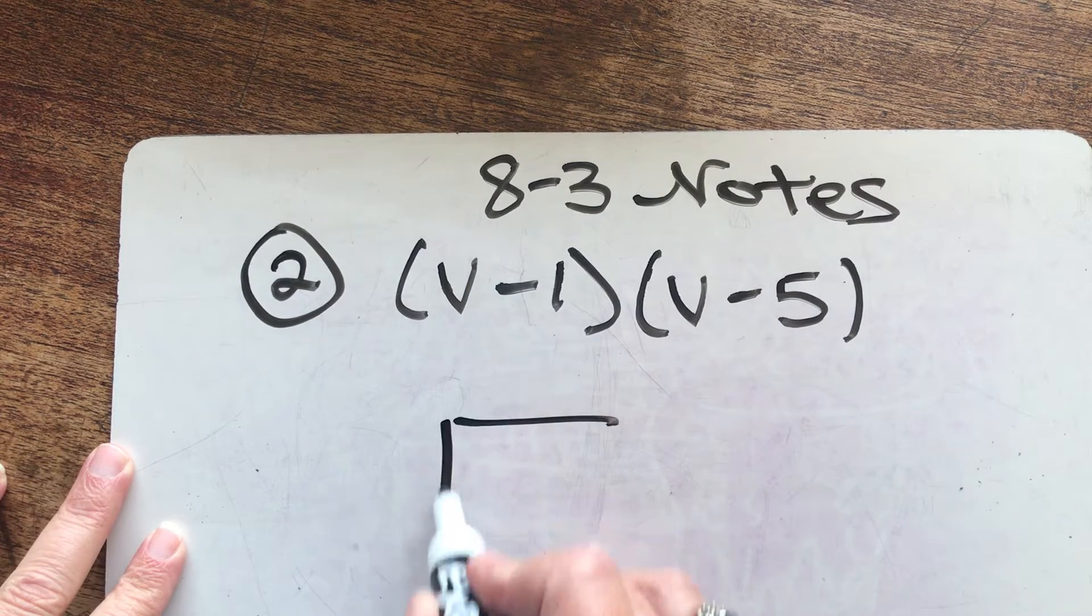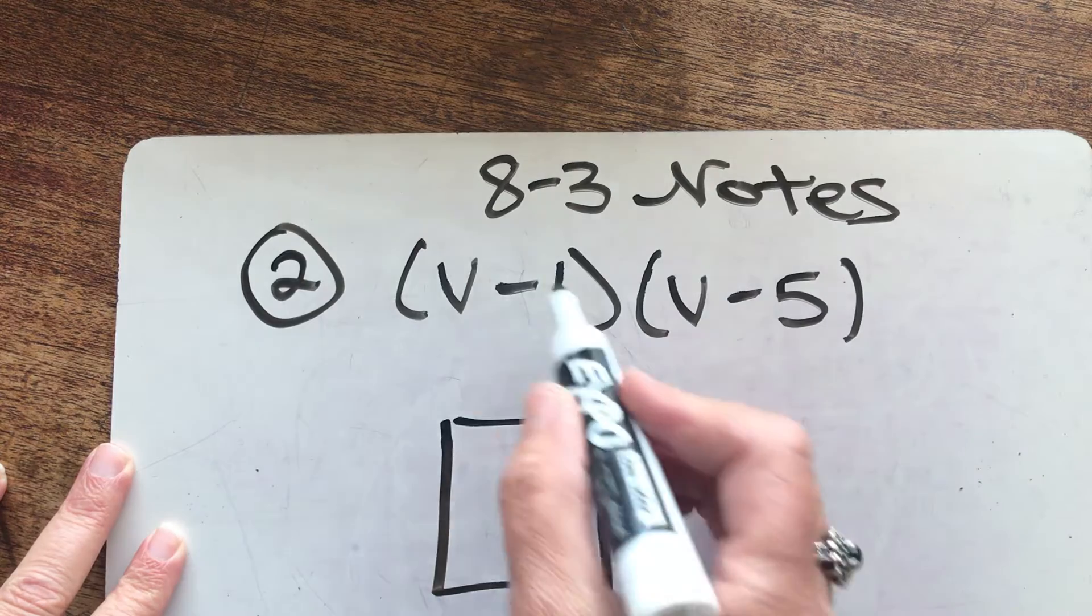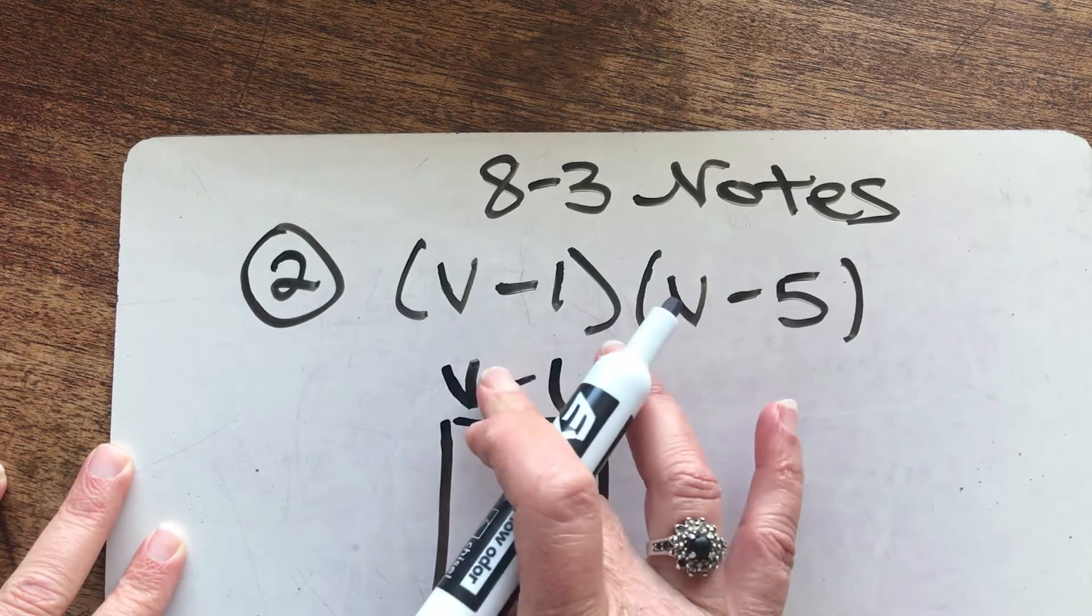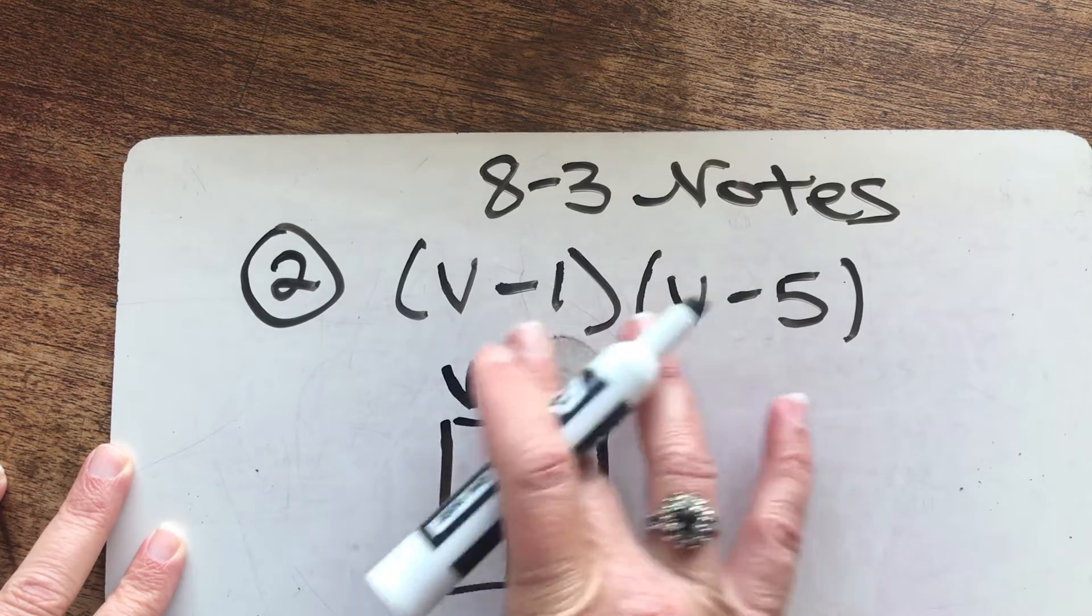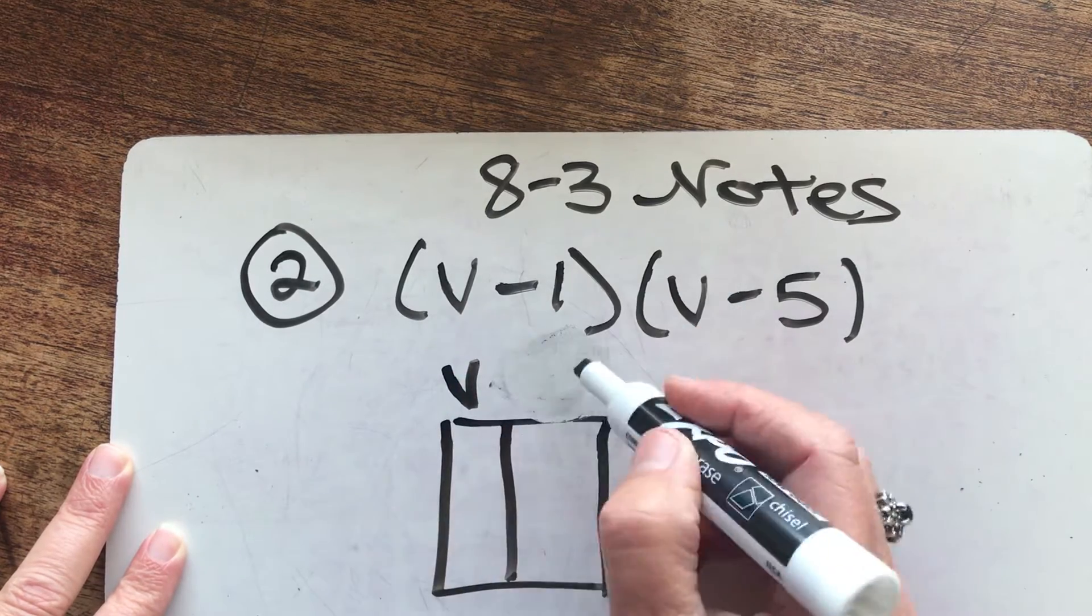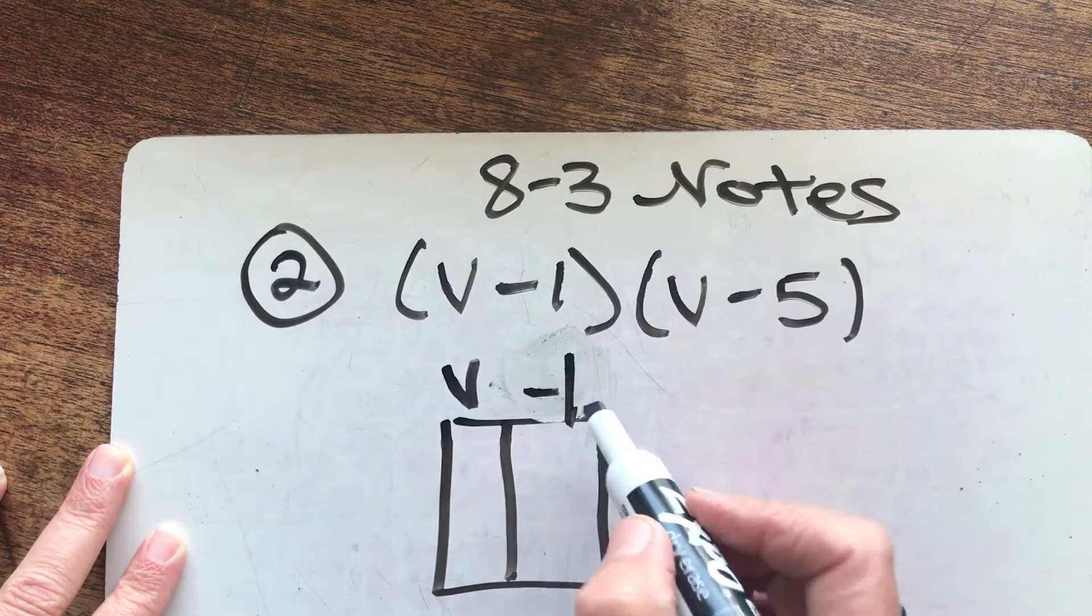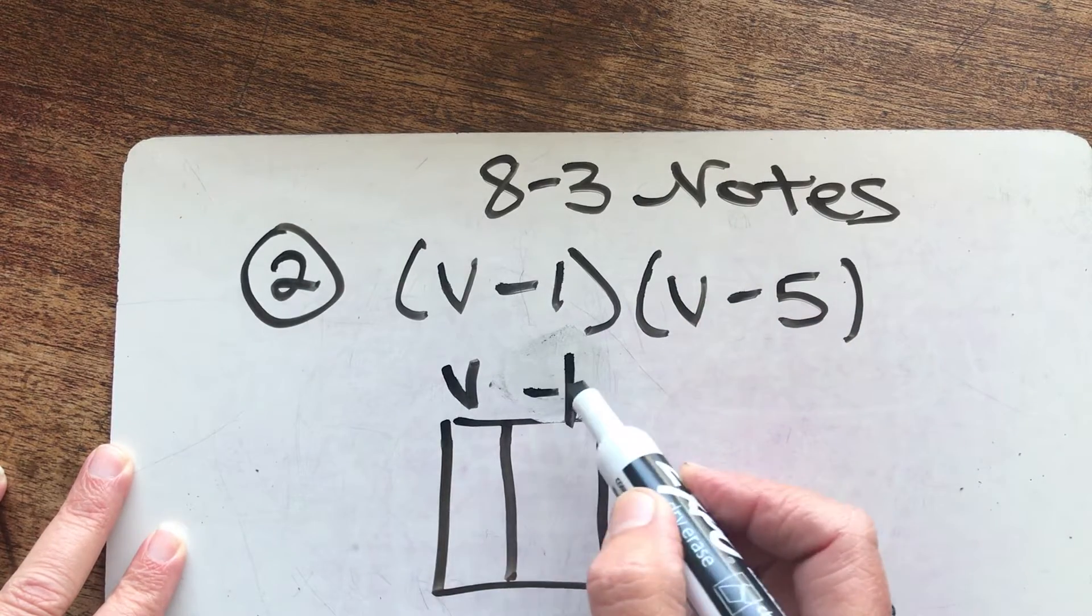So here I go with my square. Remember the first one goes on the top. I'm going to correct that. That's not really good form, what I just did. I'm going to make sure the negative one is right up on top of that column. I want to make sure I see that that negative is with the one.